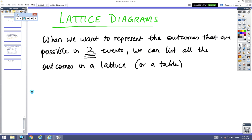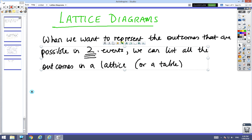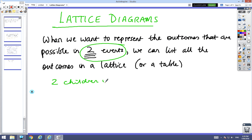We're looking at lattice diagrams, which is just another way to represent the things that can happen in a probability question. The important thing to note is it only works when we're looking at two things happening, like two children in a family, or toss a coin and throw a die. You can only have two things.